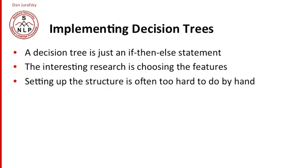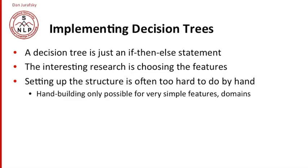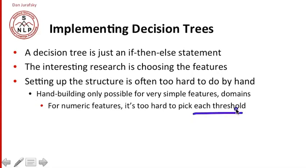In general, the structure of the decision tree is often too hard to build by hand. Hand building of decision trees is possible only for very simple features or simple domains. You might build a simple decision tree with six or seven rules like this for some simple tasks. But it's very hard to do for numeric features because you have to pick the threshold for each of the numeric features.